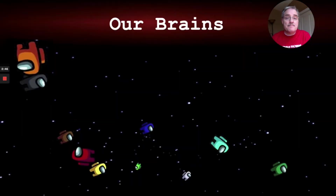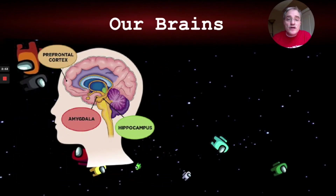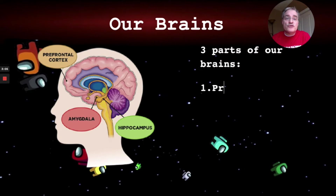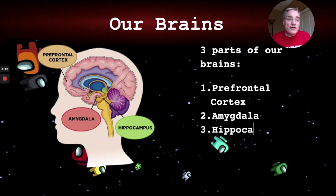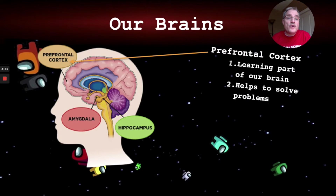Let's talk about our brains. We've talked about three main parts before. The first is the prefrontal cortex, or the PFC. The second is the amygdala, or the security guard. The third is the hippocampus, or the library. Specifically, the prefrontal cortex is a special part of our brain — it's the learning part. It helps us solve problems, pay attention, and make good choices. It's really our best part.